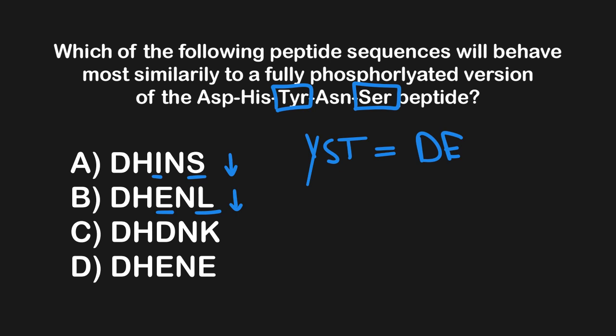In answer choice C, the tyrosine is replaced with aspartic acid — a good substitution since it mimics the phosphorylated version of tyrosine — but serine is replaced with lysine, which is positively charged. Since phosphorylated serine would carry a negative charge, lysine is the opposite, so this also gets a down vote. In answer choice D, tyrosine is replaced with glutamic acid and serine is also replaced with glutamic acid — both are phosphomimetic substitutions. Therefore, D is the correct answer.